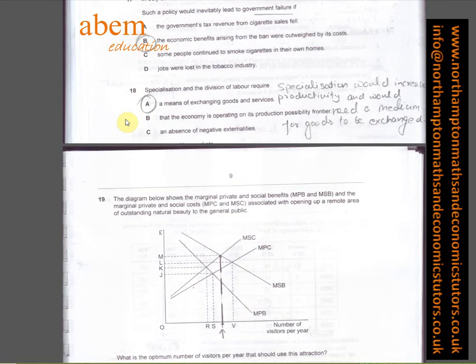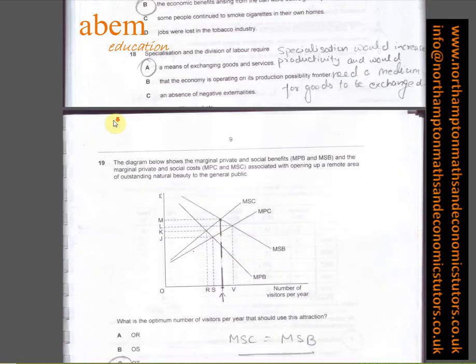In question number seventeen, B is the answer, which is straightforward. In question number eighteen, specialization and division of labor require a means of exchanging goods and services. In my earlier video I gave examples: if a dentist treats a teacher's teeth, the teacher pays in money. If the dentist's son gets private tuition from the teacher, he pays in money. So money is the means of exchanging goods and services.